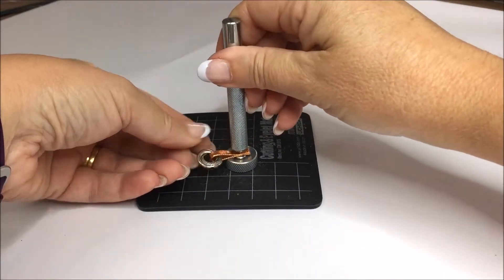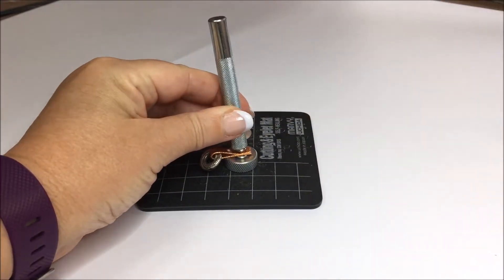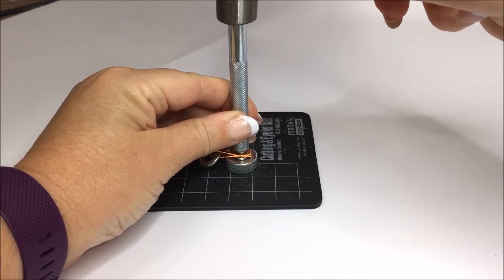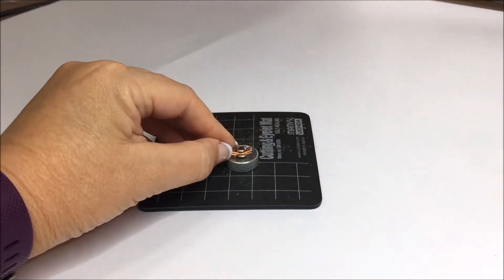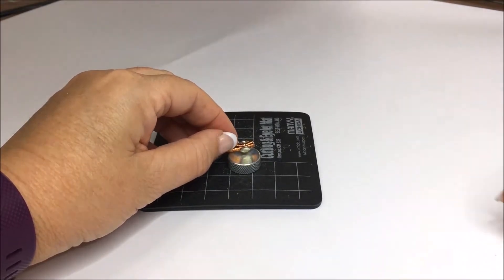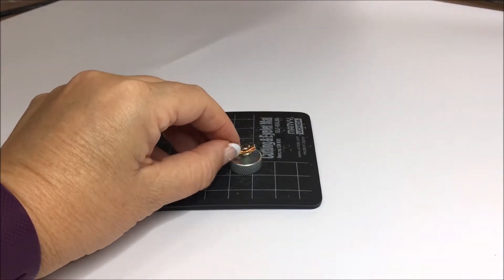Place the setting tool on top of the cap and hammer it two or three times. Check that it's firmly in position, and if not, tap it again.